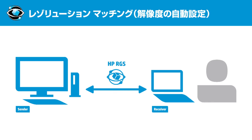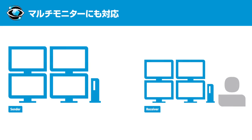遠隔のワークステーションに接続した際はセンダー側の解像度をそのまま維持してアクセスすることもできます。レシーバーとなるPCやMacの解像度が低い場合は自動的にレシーバーの解像度にセンダーの解像度を合わせることも可能です。フルHDの解像度の4倍に当たる4K解像度もサポートしています。